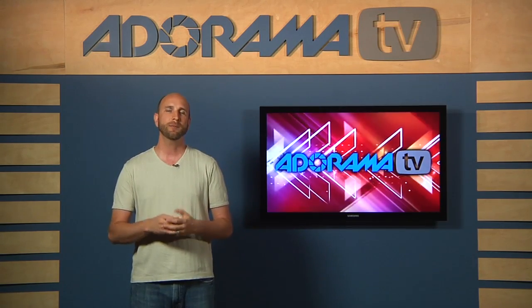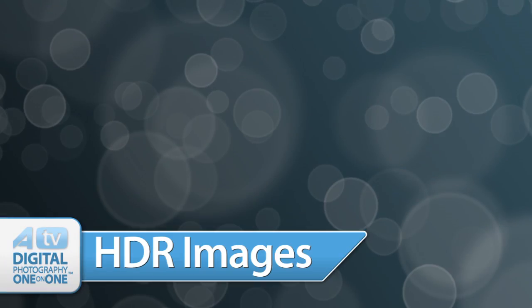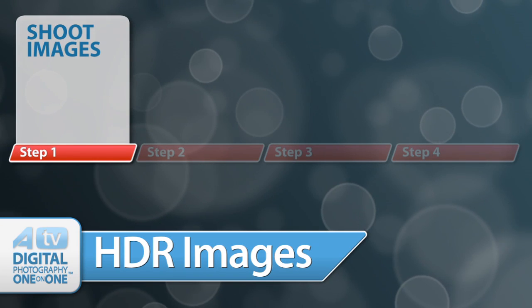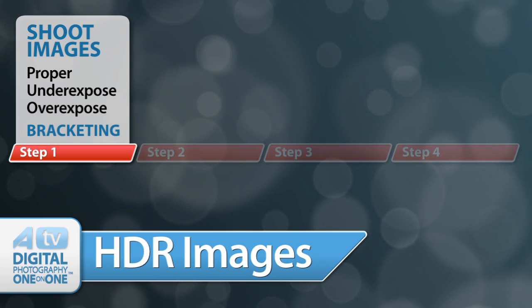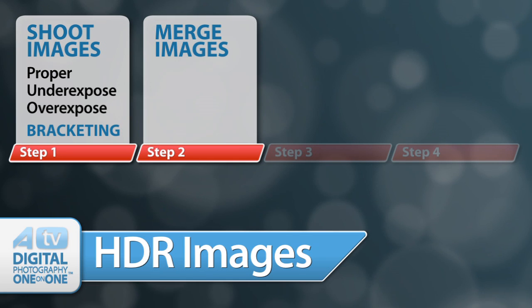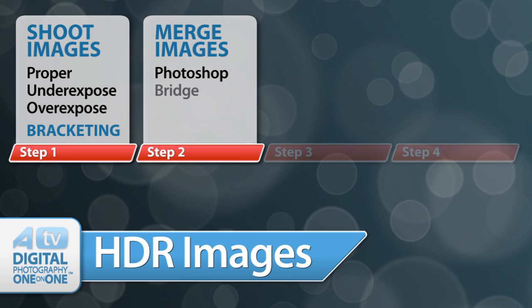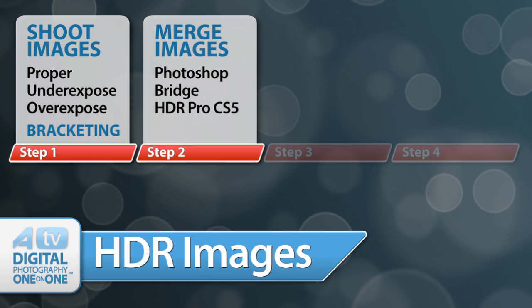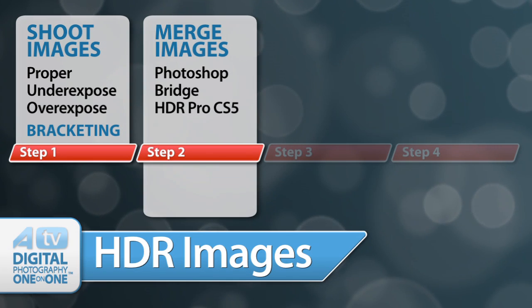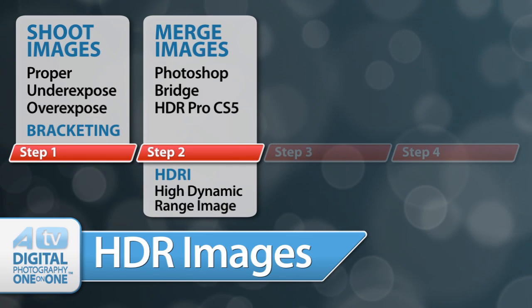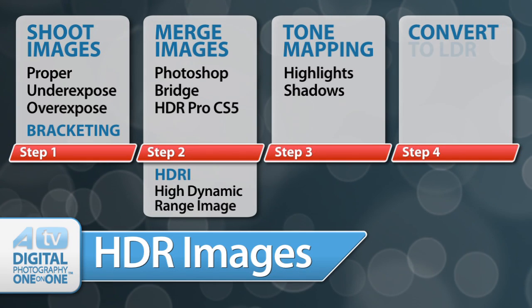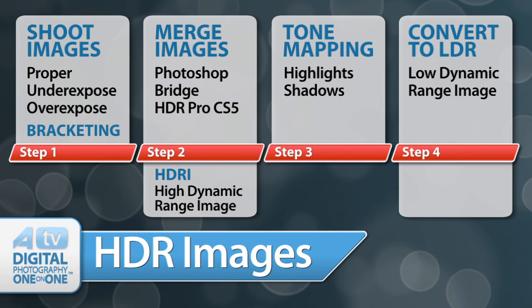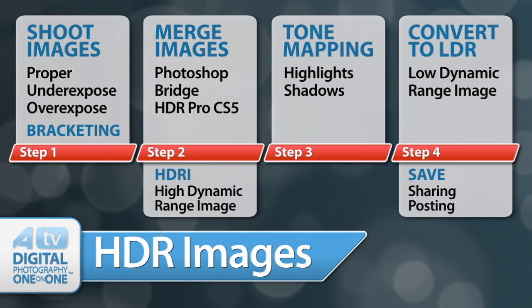It can be broken down into four steps. Step one: shoot your images — one at the proper exposure, then at minimum one underexposed and one overexposed shot; this is called bracketing. Step two: merge those images using Photoshop and Bridge, specifically HDR Pro built into Photoshop CS5. Step three: do your tone mapping, telling the software how to apply highlights and shadows. Step four: convert the HDRI image to an LDR image, then save it to share with friends or post to your portfolio.